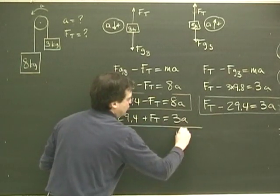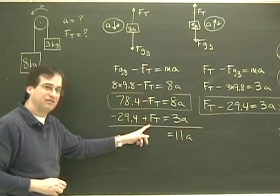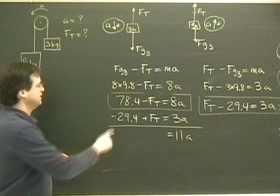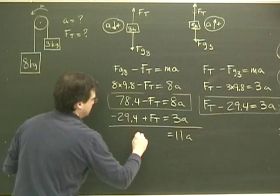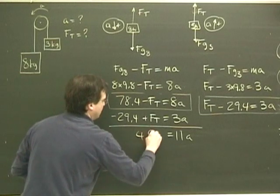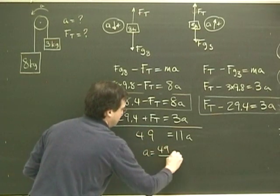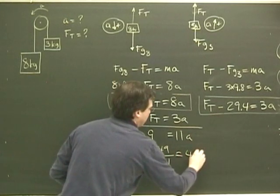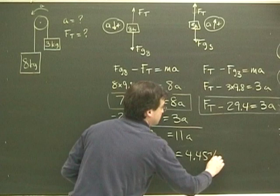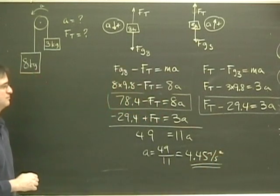If I add them together, this is going to be 11a. And look, the tensions are going to drop out. Negative Ft, positive Ft, I got zero. I take 78 minus 29.4, and that's going to be 49. 49 equals 11a. So the a is 49 divided by 11 is going to be 4.45 meters per second squared. I now have the acceleration.